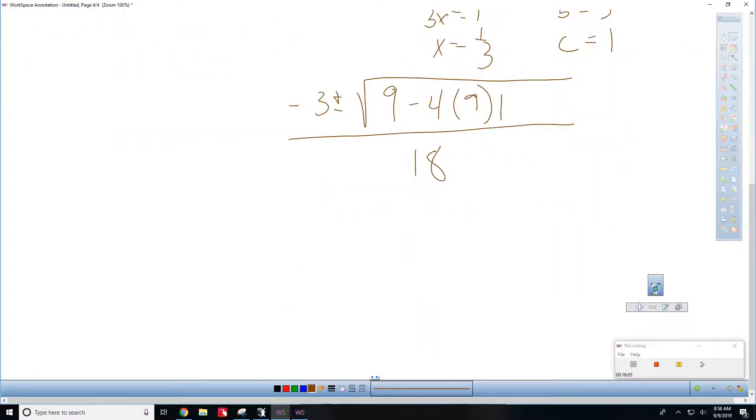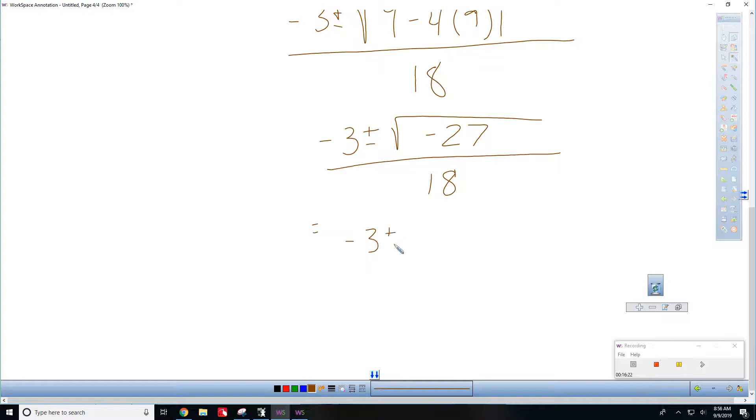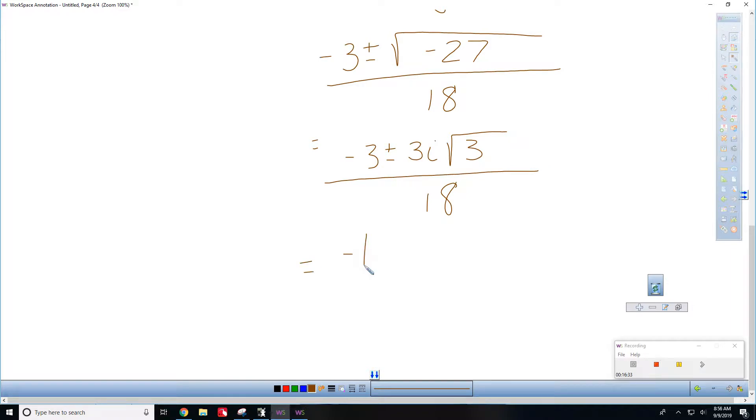Notice, this is going to be a negative under the radical, which is how I knew it was imaginary. 9 minus 36. Negative 27 over 18. Scroll down again. Minus 3 plus or minus. This would be 3i radical 3 over 18, which simplifies to negative 1 plus or minus i radical 3 over 6. There's two answers there. Your other answer was x equals 1 third.